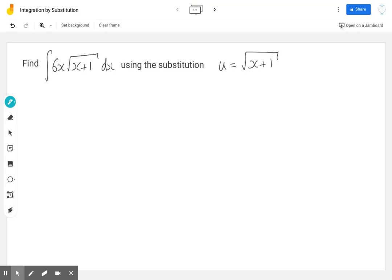In this video, we're going to look at finding the integral of 6x times the square root of x plus 1 dx using the substitution u equals the square root of x plus 1.